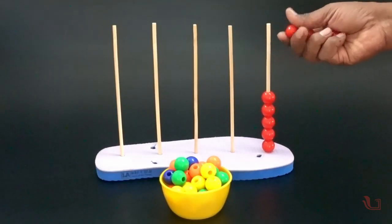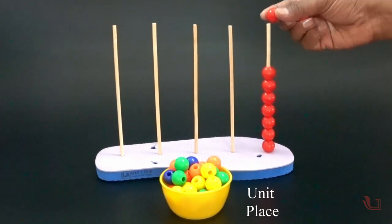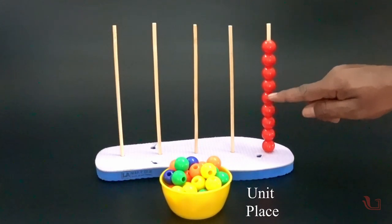Each individual bead in the stick represents value 1. And hence, it's the unit place for all the beads. Only 9 beads can be placed in the unit place.